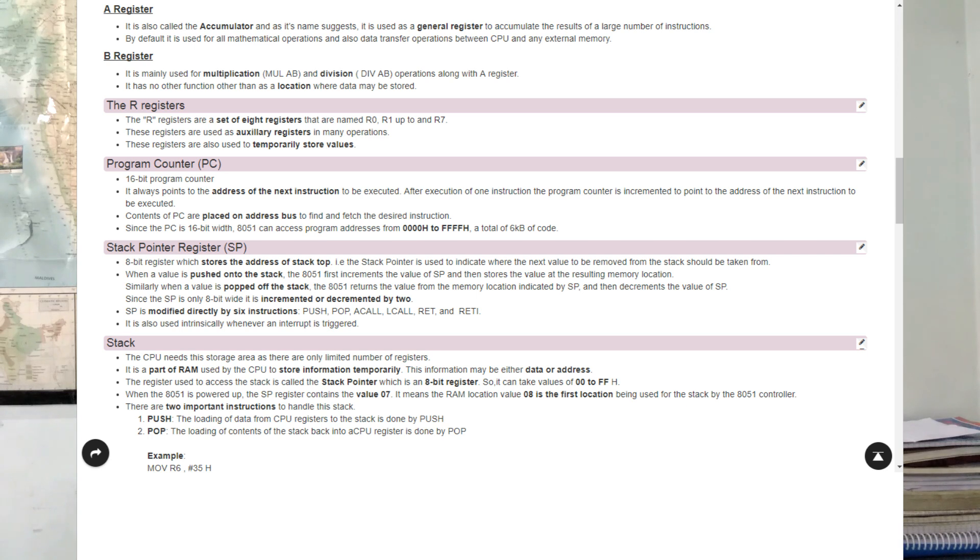Second, DPTR (data pointer). Data pointer is a 16-bit register which can be split into two halves. Lower 8 bits is called as DPL and higher 8 bits are called as DPH which can be used separately also. Data pointer is used to fetch the data from external memory or internal program memory.